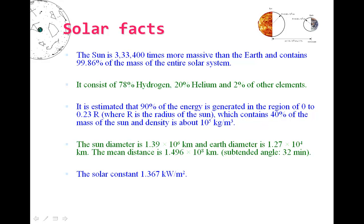The solar constant is 1.367 kW per m². This is also called extraterrestrial radiation. The solar energy received outside the atmosphere is called extraterrestrial radiation or solar constant.